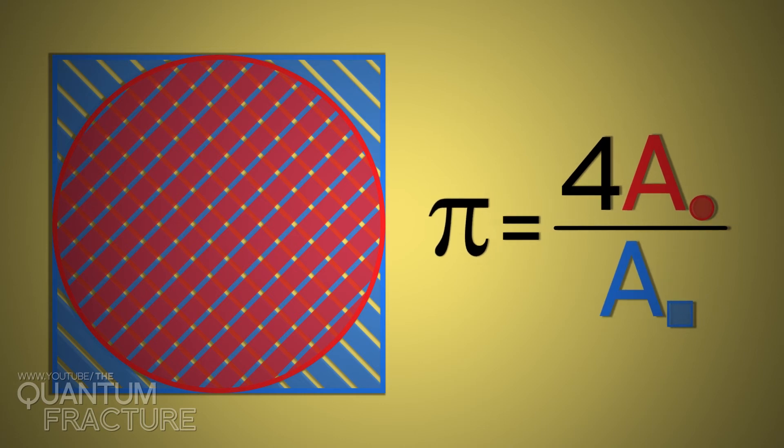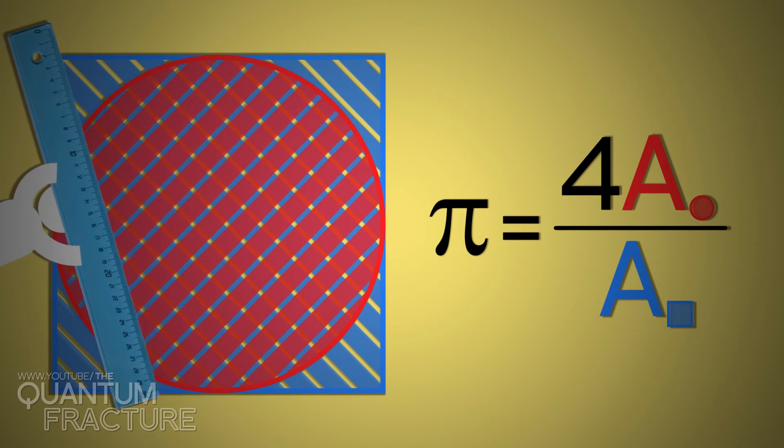This means that obtaining the value of pi depends on our ability measuring these areas. Bad news! If we already had a hard time measuring the perimeter, imagine the headache of measuring the entire surface.